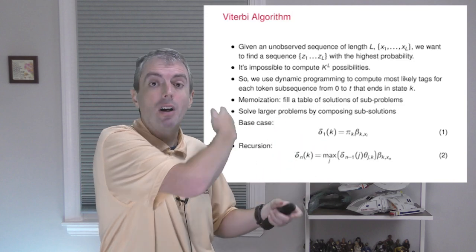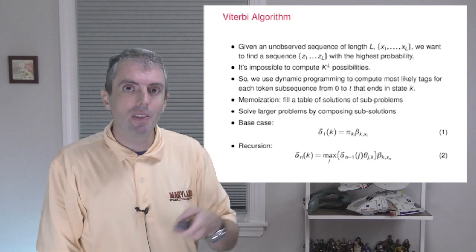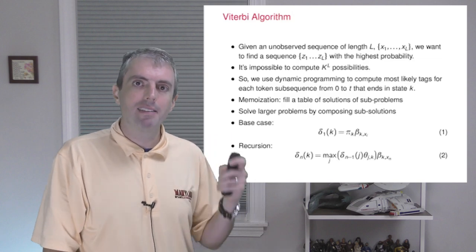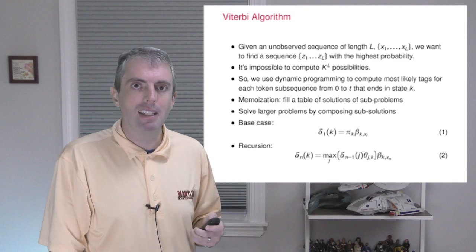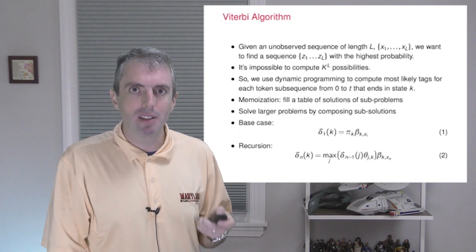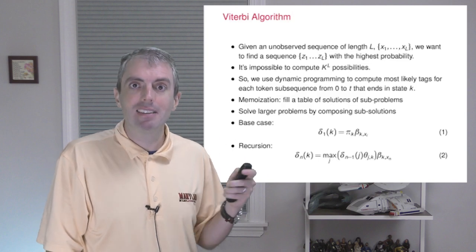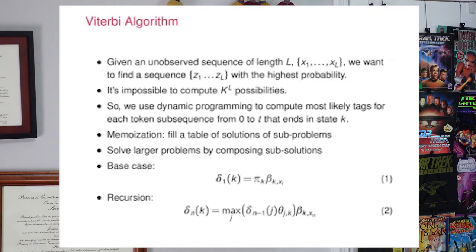To turn that into math, if we want to find out what is the best probability that we can get from some sequence of part-of-speech tags ending up in hidden state k at time n, we look over all of the other part-of-speech tags j that could have gotten us there, multiply the probability of the solution that we had at the previous time n minus 1 by the transition probability of going from j to k, and then multiply that by the probability of observing the word that we saw at position n, given that we're now in state k.